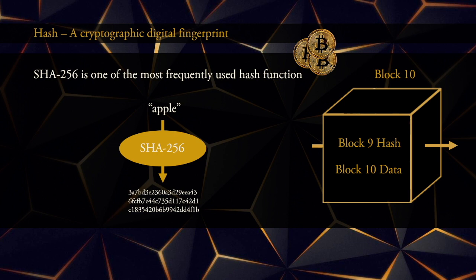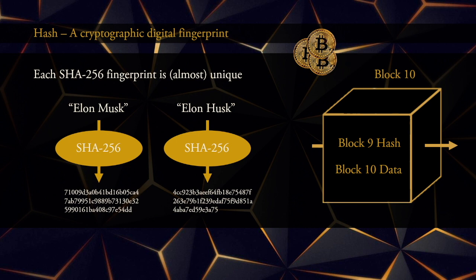Let us now have a look at a couple of examples. Firstly, what is the hash of the word APPLE — or asking in a different way, what is the digital fingerprint of the text string APPLE? The answer is the string 3A7BD3 and so on. Here we have the hash of the text strings ELON MUSK and ELON HUSK. We see the digital fingerprints are different. For all practical purposes, each fingerprint is unique, meaning that if you give me two different text strings such as ELON MUSK and ELON HUSK, they will have a different hash.